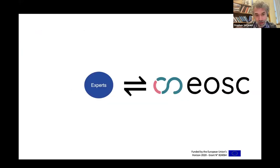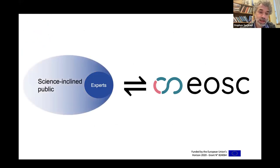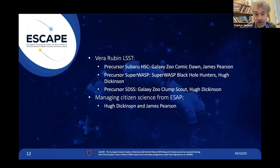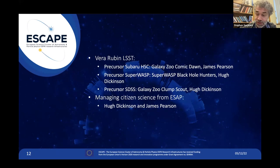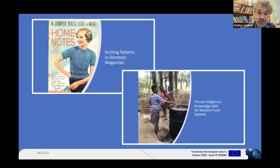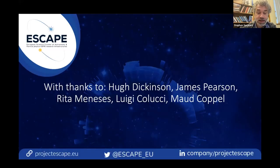Our vision is that experts interacting with the European Open Science Cloud are leading the way for the science-inclined public. Today we'll be hearing about projects that are precursors to the Vera Rubin LSST, and also about managing citizen science projects from within ESAP. These activities are not simply focused on astronomy and astroparticle physics — we also have projects in social sciences and overseas development.